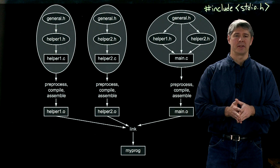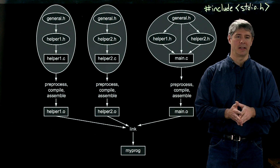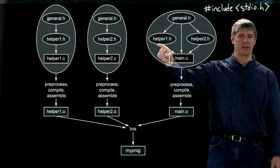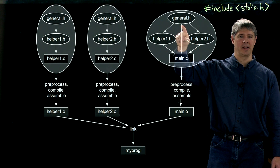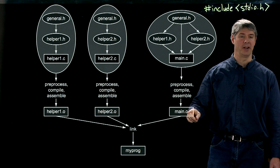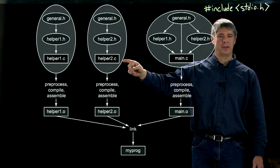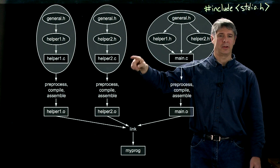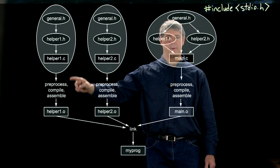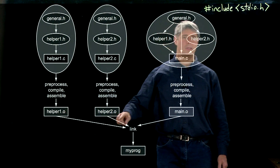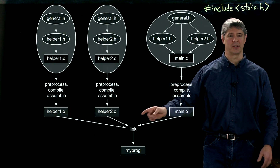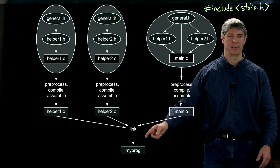Each C file compiles independently into its own object code. main.c includes helper1.h, helper2.h, and general.h, and compiles to main.o. helper2.c compiles to helper2.o, and helper1.c compiles to helper1.o. We now have two library object files and the main object file. Finally, all three are linked together to create the final program, myprog.